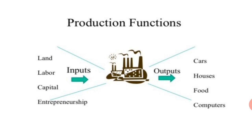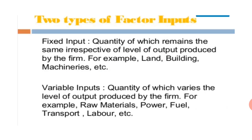Input means everything you use to produce the output. There are two types of factors: fixed input and variable input. Fixed input is the quantity which remains the same irrespective of the level of output produced by a firm. For example, land, building, and machines are fixed. If you buy one machine, it is fixed for another 5 or 10 years. If you bring a laptop for work, it is fixed for another 3 to 5 years.